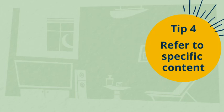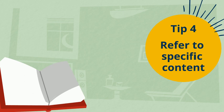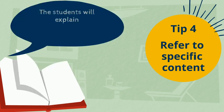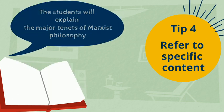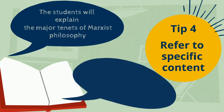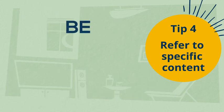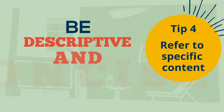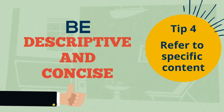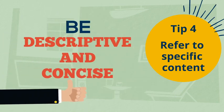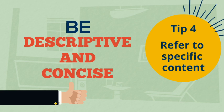Tip number four: refer to specific content in your learning outcome. For example, 'the students will explain the major tenets of Marxist philosophy,' or 'the students will describe the processes of cellular respiration.' You want to be descriptive and concise so that your students know exactly what to focus on.